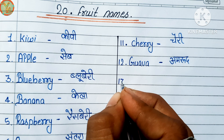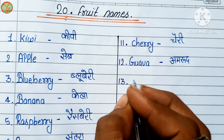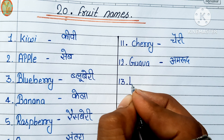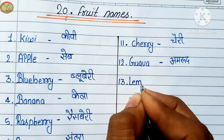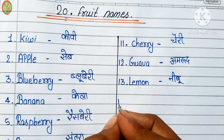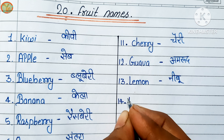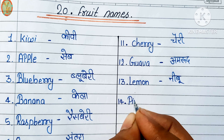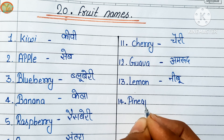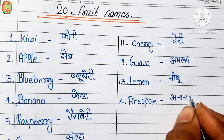Thirteenth number: lemon. Lemon means nebu. Fourteenth number: pineapple. Pineapple means ananas.